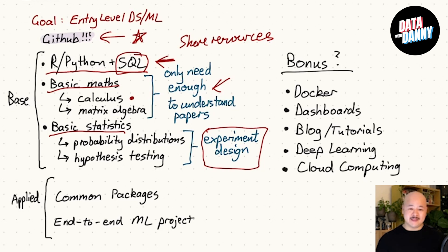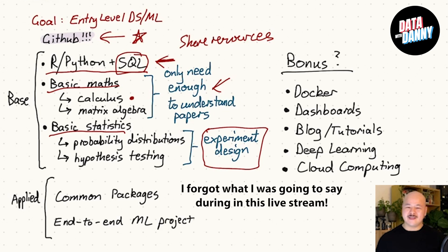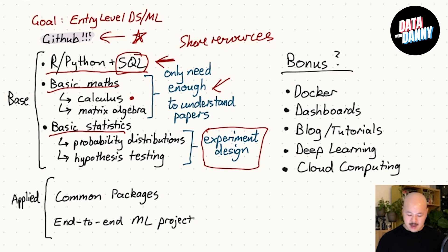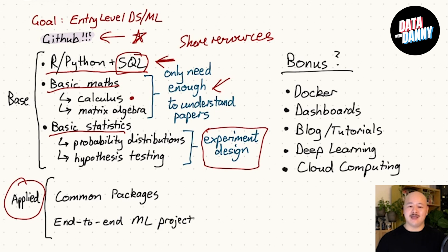Hypothesis testing knowledge is very important for insight validation, and probability distributions get you to think in terms that are very useful for machine learning specifically. I'll try and put more thought into explaining that, but just know that probability distributions are really important. For the applied component, now that you know the base knowledge, you need to demonstrate what you can do with it — show that you can use that in a real situation.